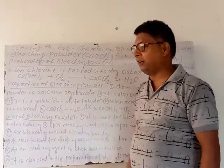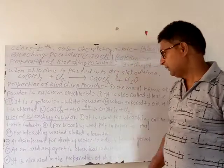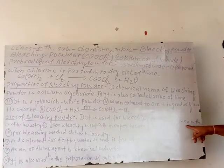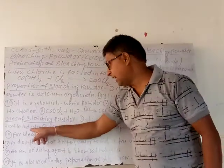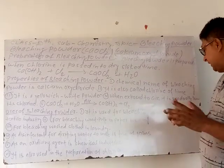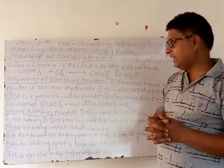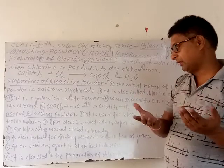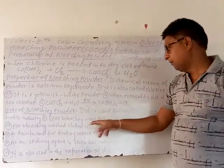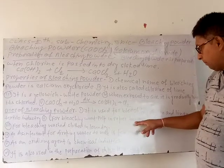Now let us understand the uses of Bleaching Powder. First point: it is used for bleaching cloth and linen in textile industries. Bleaching Powder is used for bleaching clothes in textile industries.